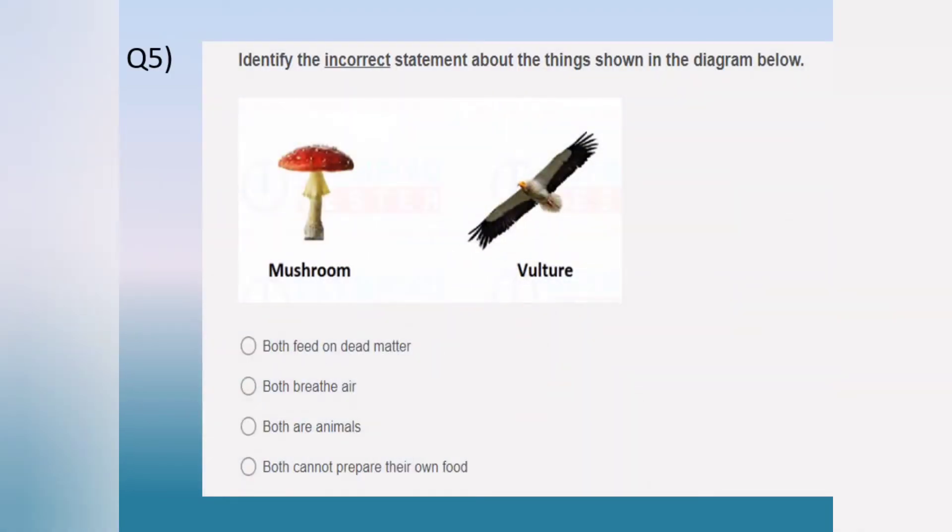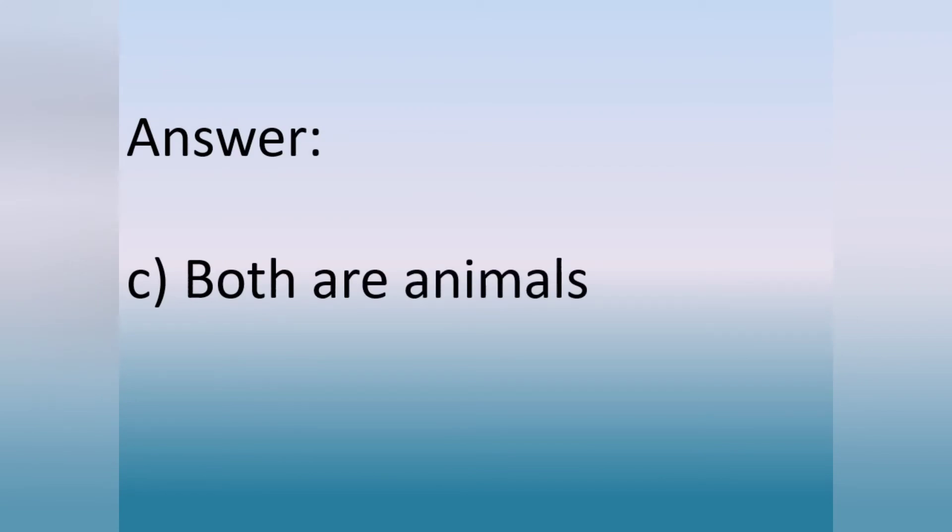Identify the incorrect statements about the things shown in the diagram below. Both feed on dead matter. Both breathe air. Both are animals. Both cannot prepare their own food. The answer is option C. Both are animals.